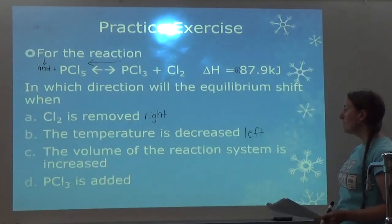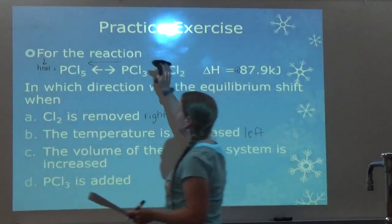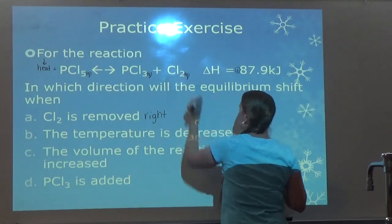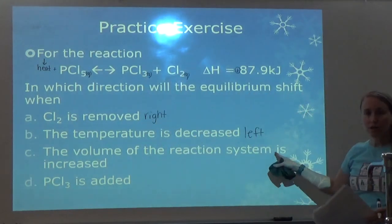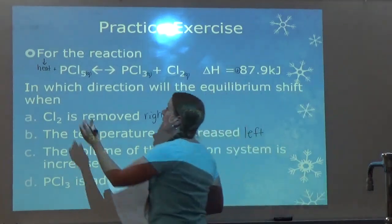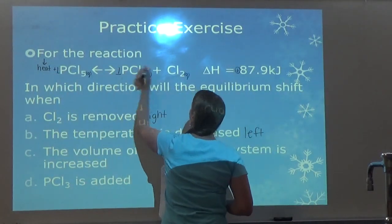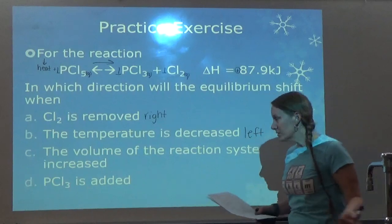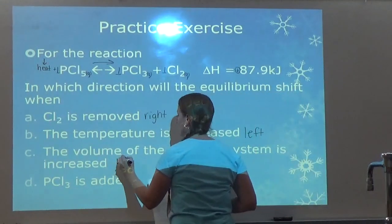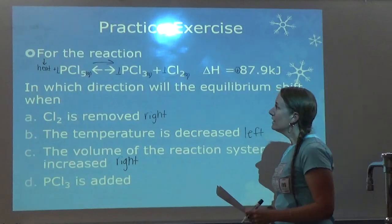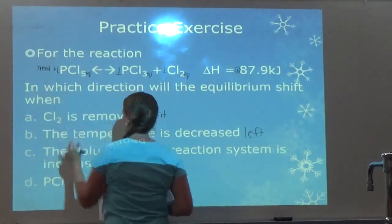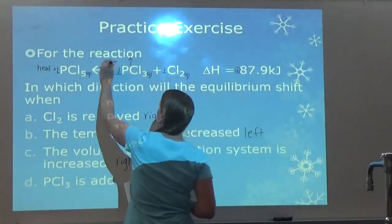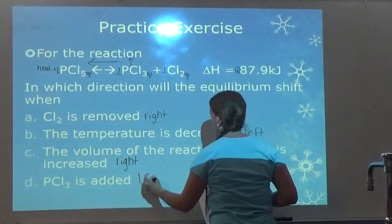Next: the volume of the reaction system is increased. These are all gases. With more volume, there's room for more particles. On one side I have one mole of gas; on the other side I have two moles of gas. More room means we want more moles of gas, so it will also shift to the right. Last: we add pCl3. If we add pCl3, it wants to get rid of it, so it will shift to the left.